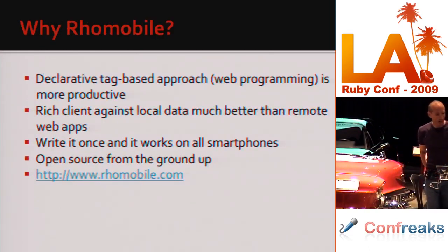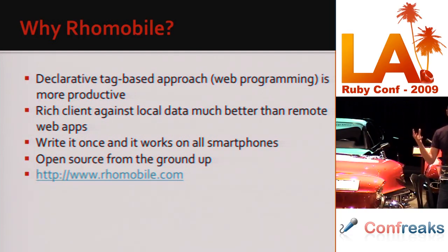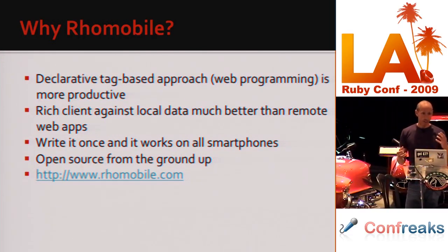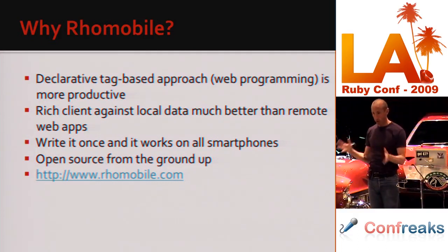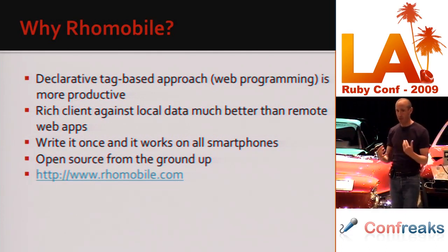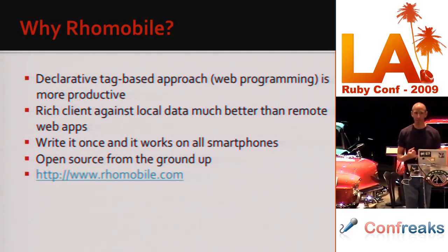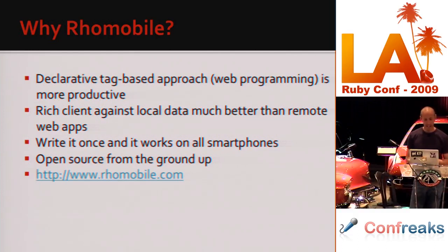Just to sum up why Rhomobile: we believe the declarative tag-based approach — i.e., web programming — shouldn't be a hard sell for Rails developers. It's just more productive than writing tons of Objective-C code, Java code, C# code, and Symbian C++ code. We think a rich client against local data is much better than remote web apps. We allow you to write it once and it works on all smartphones. Please give it a try and judge it for yourself. It's open source from the ground up.